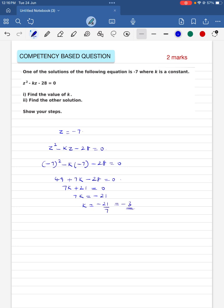So we got the value of k. Now let us substitute this in the given equation. The given equation was z squared minus kz minus 28 equal to 0 in which the value of k I am putting as minus 3. So minus of minus 3z gives me plus 3z minus 28 equal to 0.